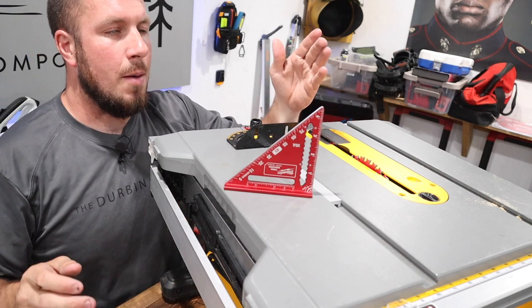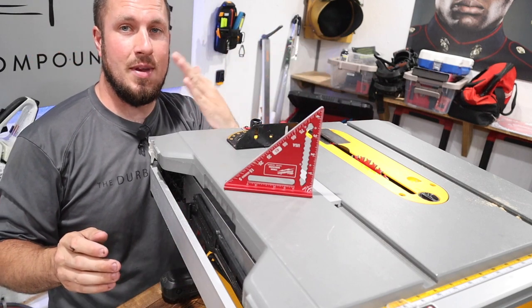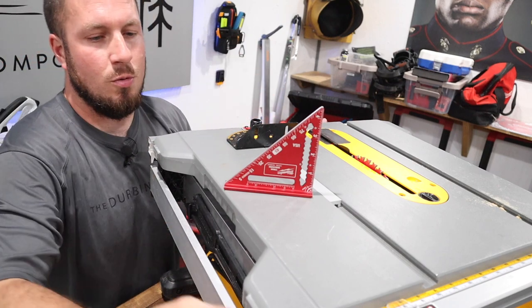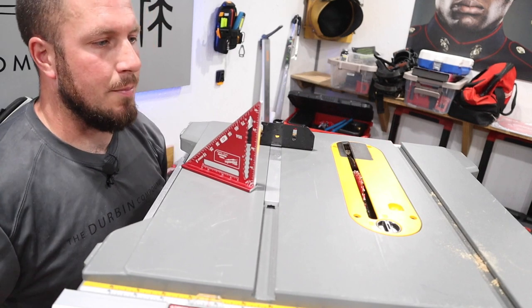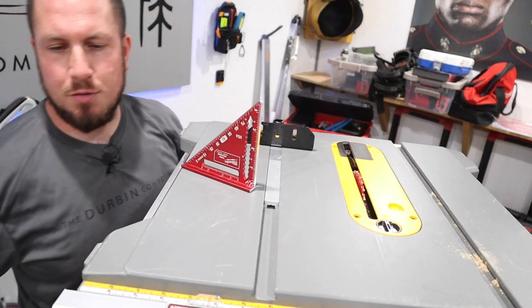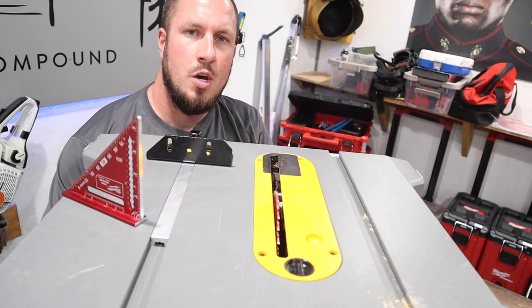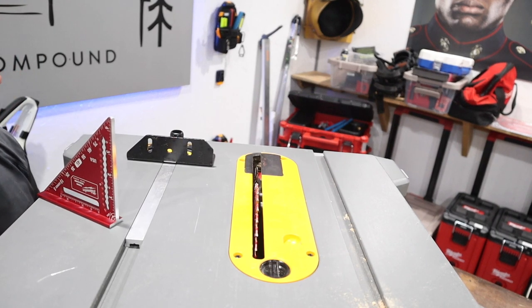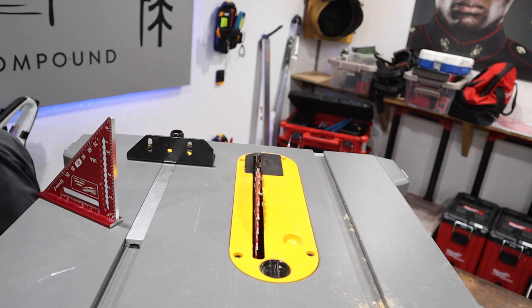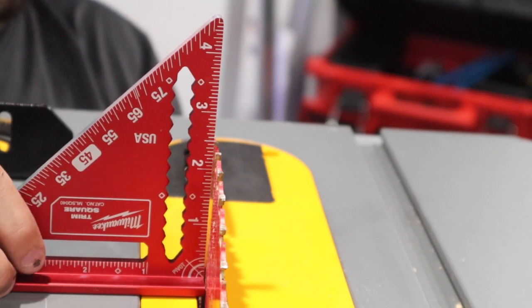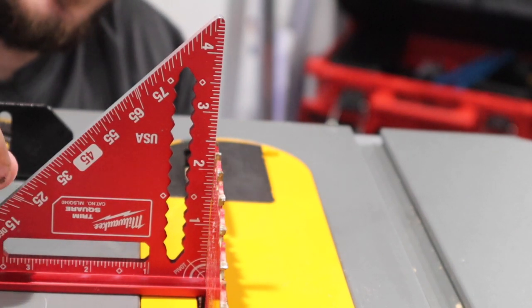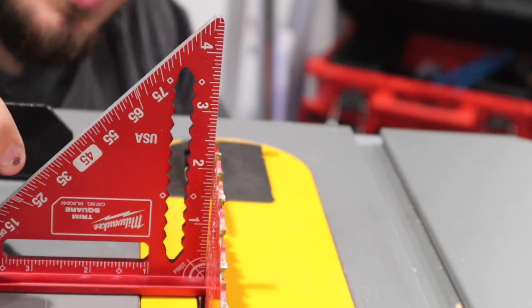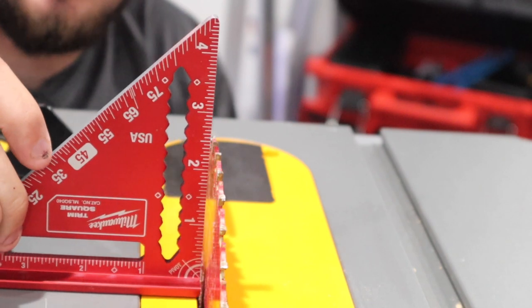So first we're going to talk about the angle of the blade coming out of the actual table. I want to get the best bird's-eye view for this procedure here. So we are going to look right down the blade. I'm going to bring it up to its maximum height. So raise your blade. Now we're going to take our square here and we're going to set it against the blade.